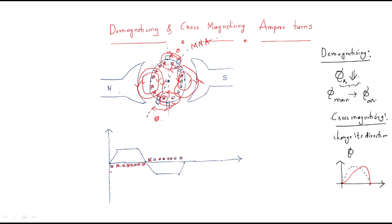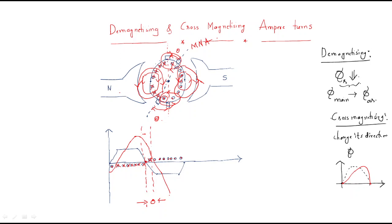Because of this conductor distribution, the waveform starts from here, reaches zero, then reaches a maximum point, and after that slowly decreases. This variation is due to the brush shifting by angle theta. From this analysis, two effects are possible: demagnetization is possible in one region and cross-magnetization is possible in another region, as marked on the diagram.